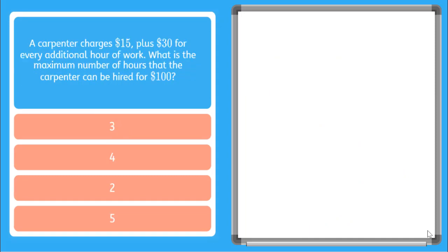This one says, a carpenter charges $15 plus $30 for every additional hour of work. What is the maximum number of hours that the carpenter can be hired for $100?